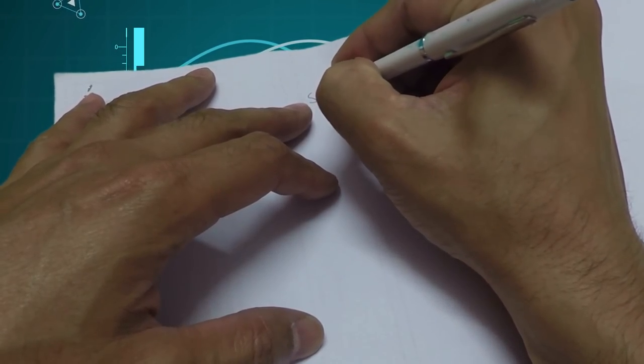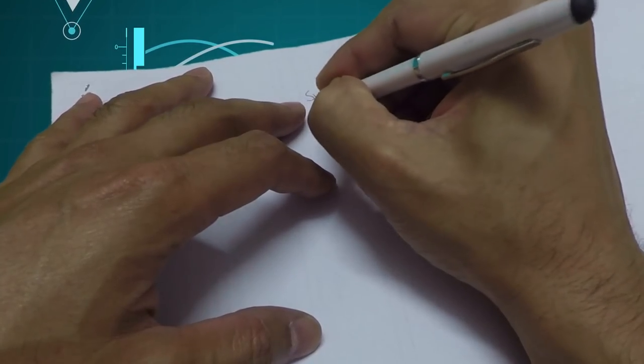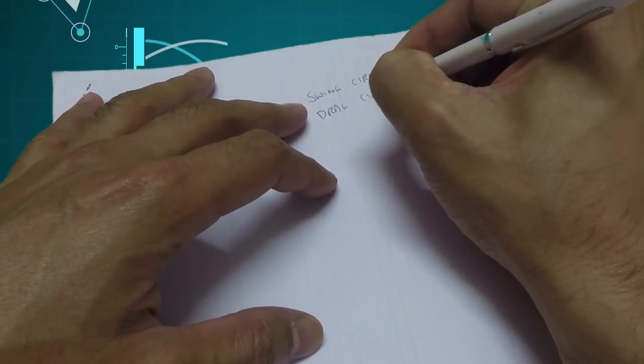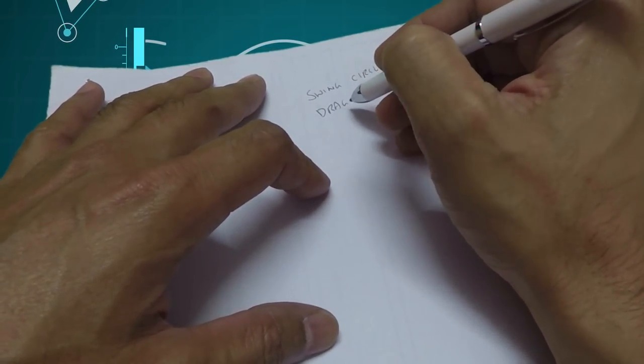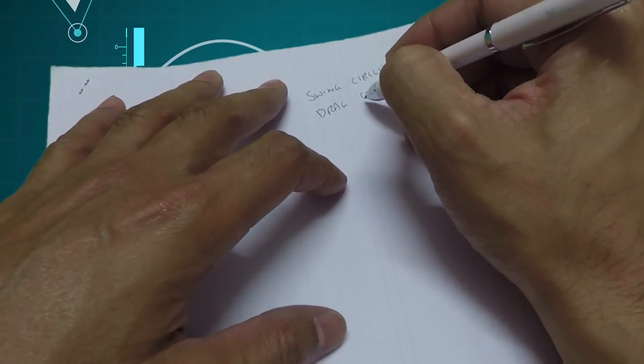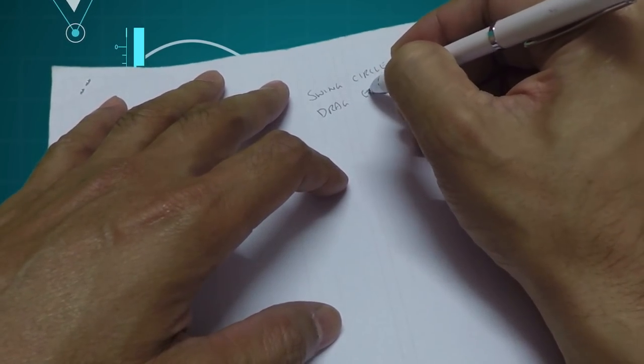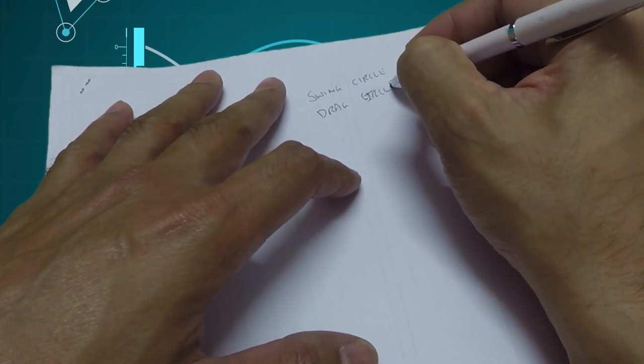One is swing circle and the other thing is drag circle. I have a lot of junior officers and cadets that don't know what is the difference between swing circle and drag circle. So these things that I am telling you will help in knowing that the ship is tracking and how it can be made.